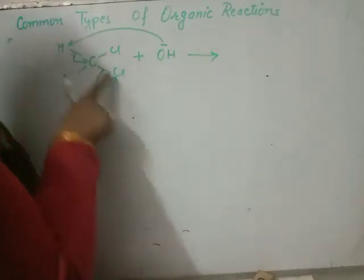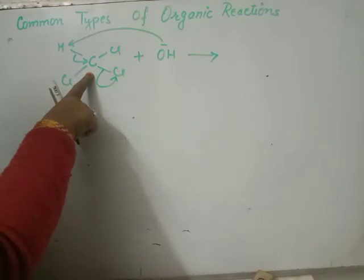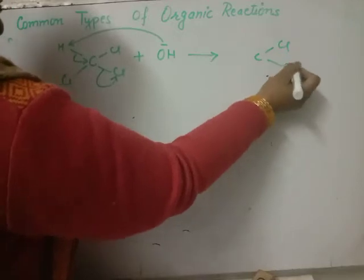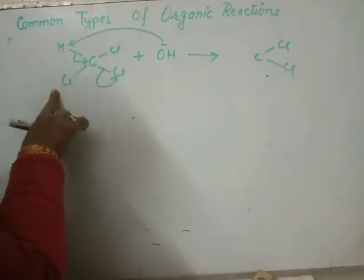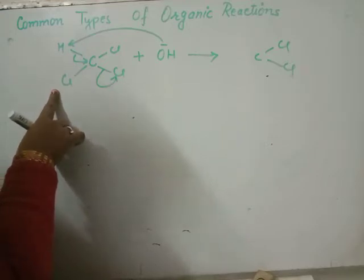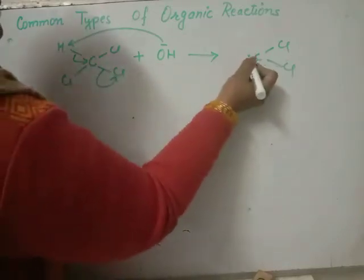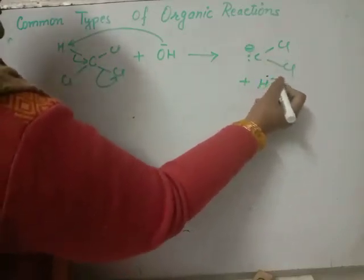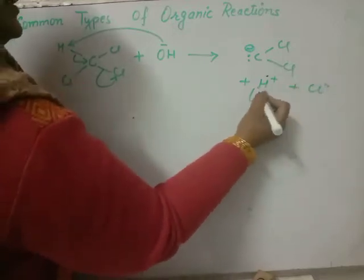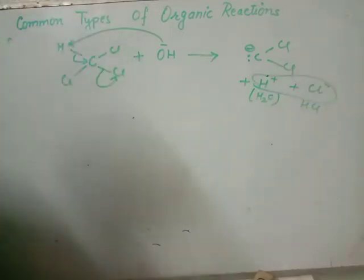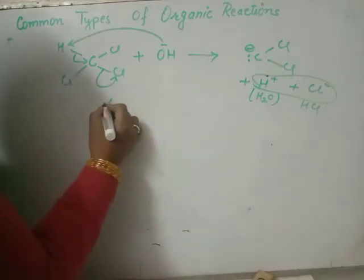Both H and Cl are removed from the same molecule, leaving two chlorine atoms. The H⁺ and Cl⁻ combine to give HCl. When two atoms are eliminated from the same carbon, it is known as alpha elimination.